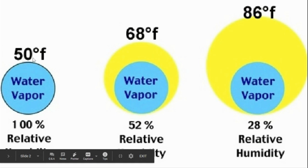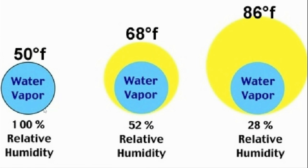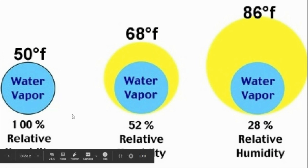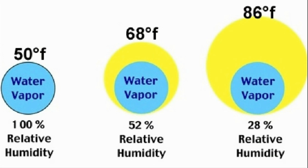If the air at 50 degrees can hold all of this and it's full, it's 100% relative humidity, and we call that the dew point — which means any more water or any less temperature. If the temperature shrinks and the yellow dot shrinks, the water comes out, usually as dew.